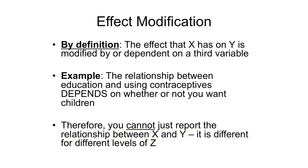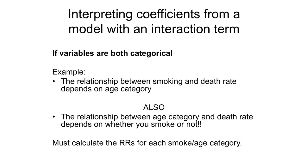If effect modification is present, the effect of x on y is modified by or dependent on a third variable. For example, the relationship between education and using contraceptives depends on whether or not you want children — so you cannot just report the overall relationship. If both x and z are categorical, you would say the relationship between smoking and death rate depends on age category, and you must calculate the rate ratio for smoking within each age category. Similarly, if reporting on the effect of age, you must calculate the rate ratio for age category within each smoking category.